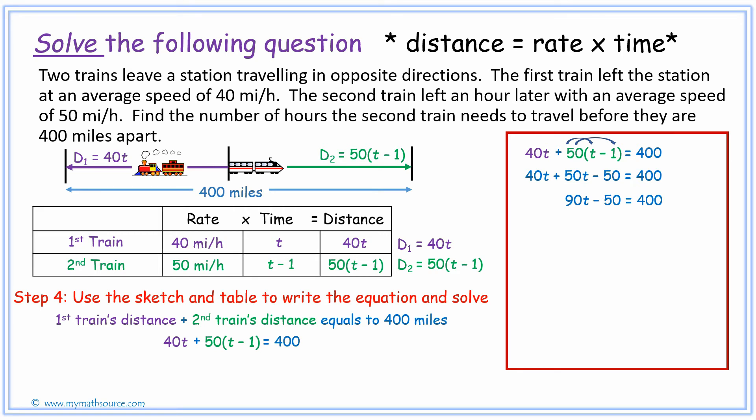Now that we have that, you can see we can still collect like terms. We could get all the numbers on one side and the variables on the left side. To do that, we're going to add 50, and what we do to one side of the equation we must do to the other side of the equation to balance it out. The 50 is going to cancel out and on the right side 400 plus 50 gives us 450, and we keep that 90t there.